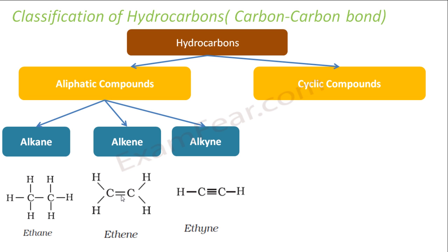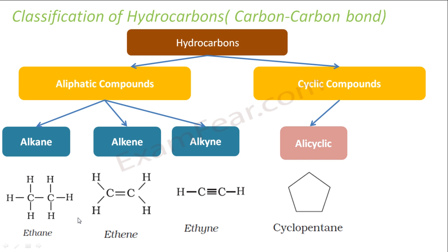Then we have alkynes, where there is one triple bond between carbon-carbon. Examples of alkanes include methane and ethane; for alkenes, we have ethene, propene, and butene. We will study in more detail about alkanes, alkenes, and alkynes. For cyclic compounds, we have alicyclic and aromatic.